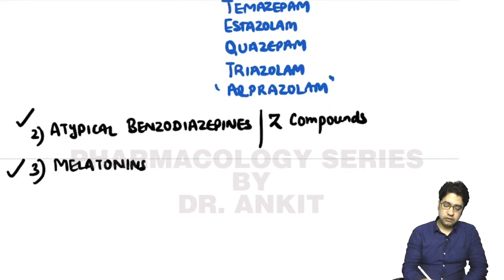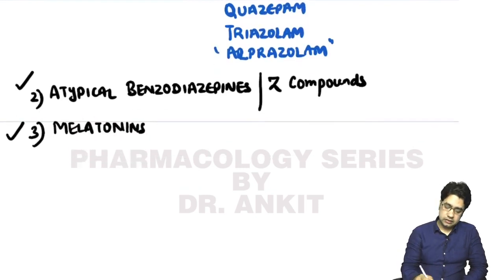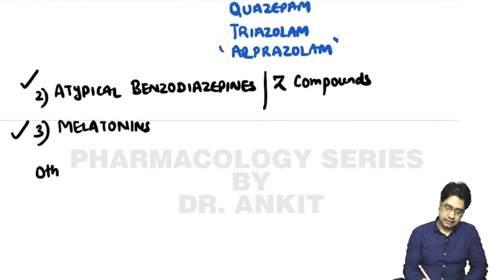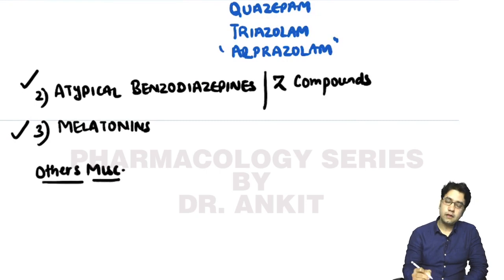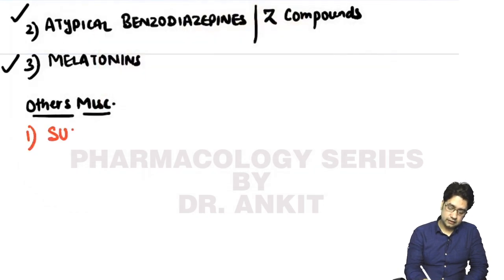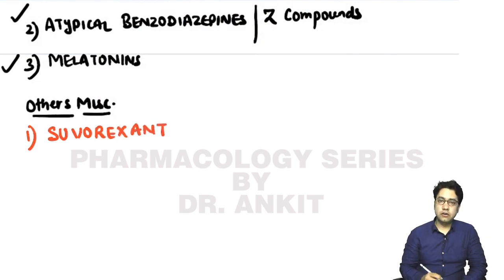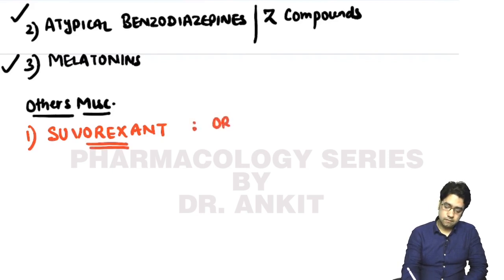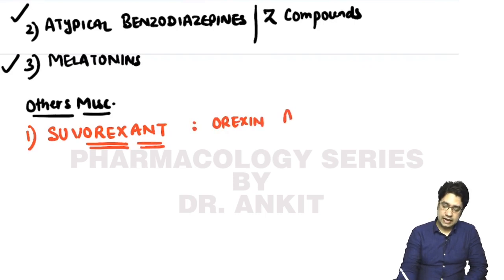Apart from these two classes, there are miscellaneous drugs used for insomnia. The first is suvorexant — the 'orex' part refers to orexin, and 'ant' means antagonist, so it is an orexin antagonist.